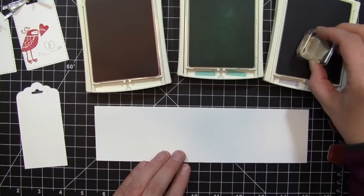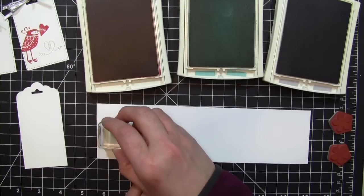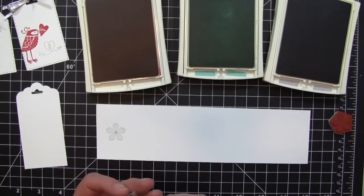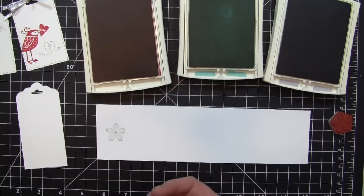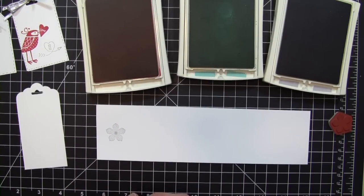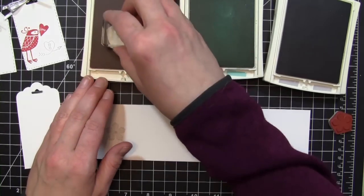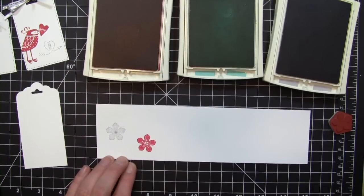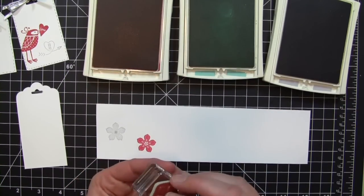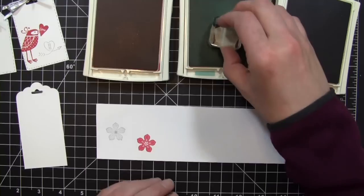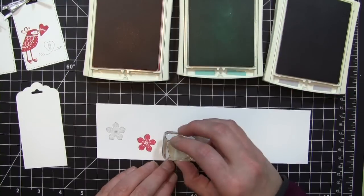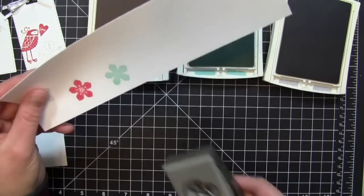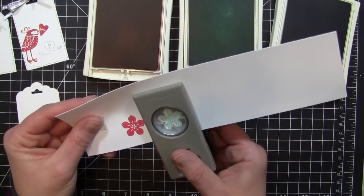For my next tag, I'm going to be using the Petite Petals Bundle Set. With this, I'm stamping this out in the Smoky Slate, Pool Party, and Strawberry Slush. I'm just going to stamp that out onto some Whisper White cardstock. Once I have that stamped out, I'm going to use the Coordinating Punch. I love coordinating punches with stamp sets. It makes it so much easier to die cut real quickly. I'm just going to punch the three of those out.